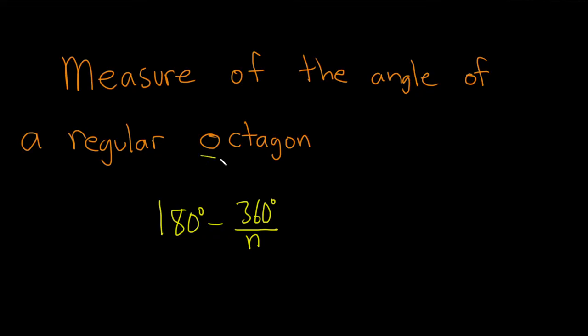So here we have a regular octagon. An octagon has 8 sides, so n is equal to 8. All we have to do in this problem is just plug in 8. Let's do it.